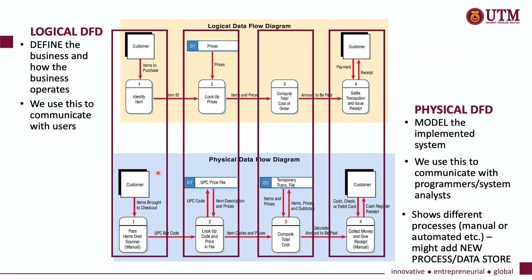We can see the difference between the logical and the physical data flow diagram. The logical DFD only defines the business and how it operates, and we use it to communicate with users by explaining how we think the system should look. Whereas for a physical data flow diagram, this is how we model the system we want to implement, and we use it to communicate with our programmers or system analysts so they know what processes are involved and how data flows from the input entity to the output entity.